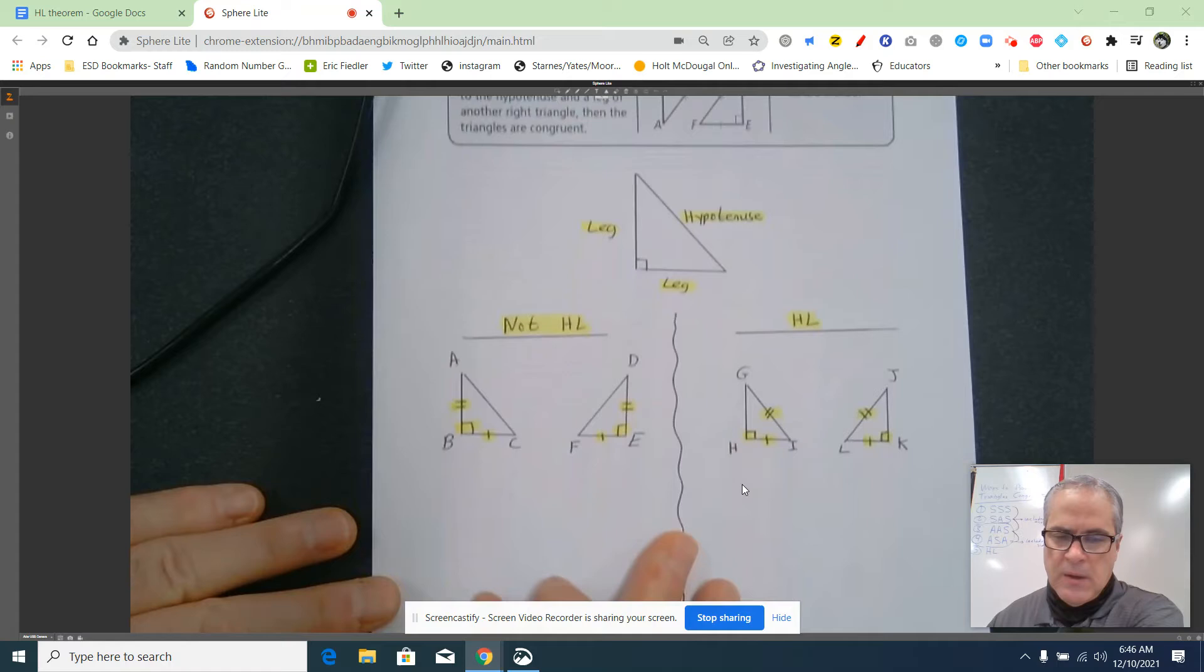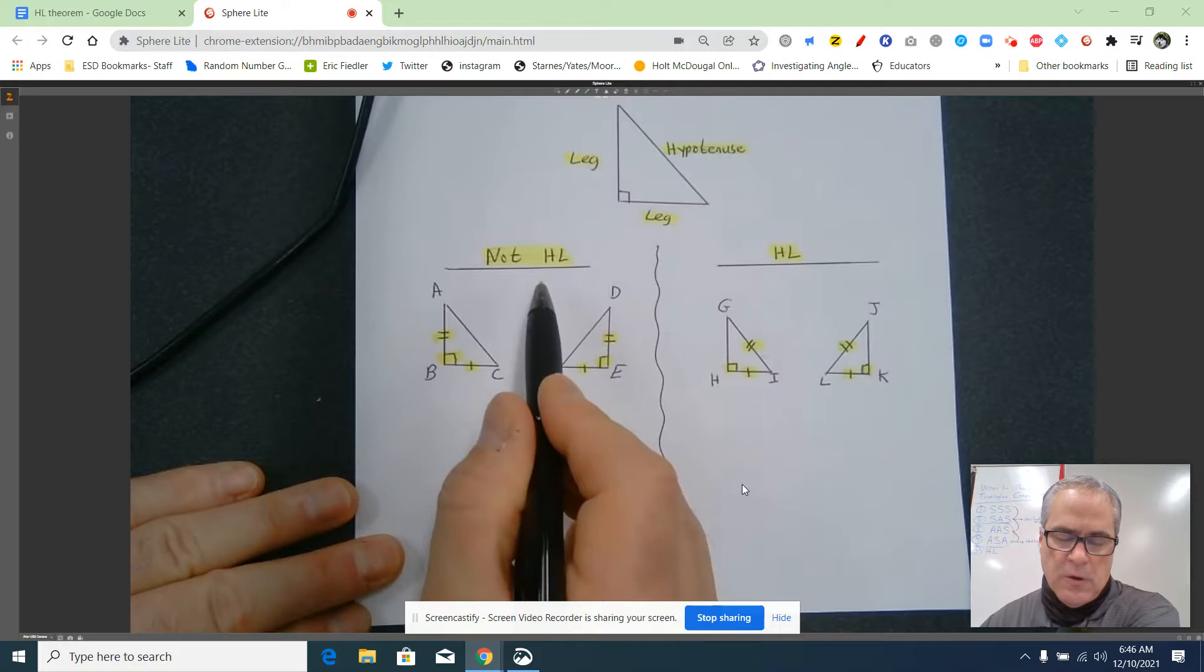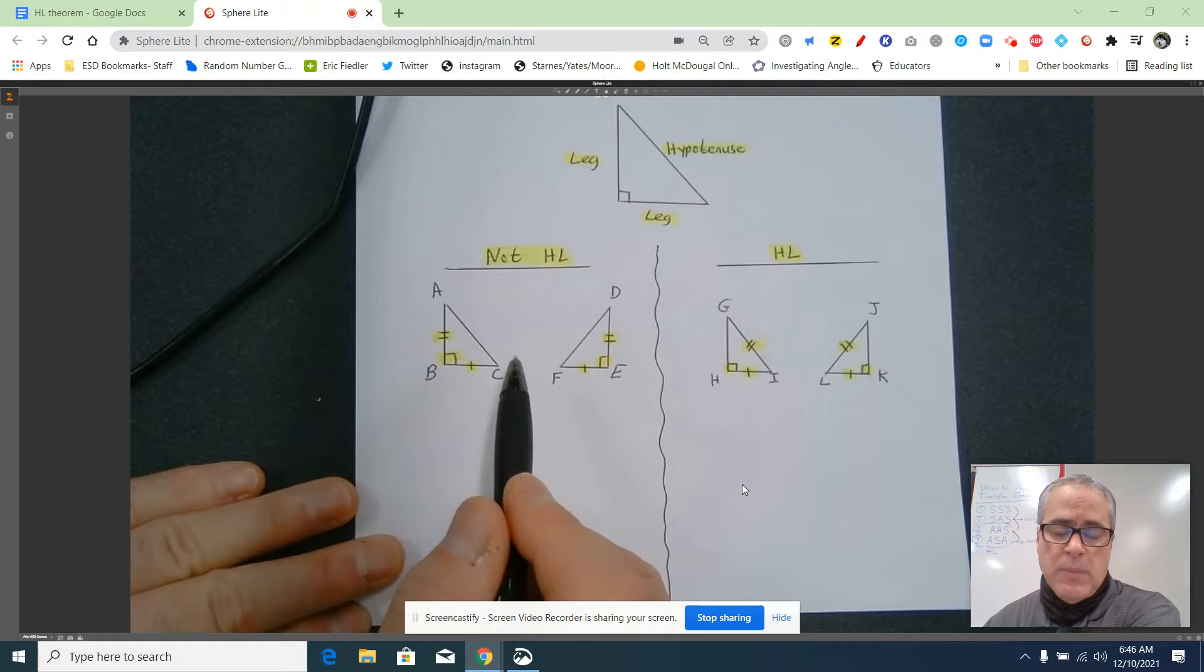This first one is a very common mistake for students. On the left, this is not HL congruency. Now I'm not saying these triangles aren't congruent. I'm just saying you cannot show it by the hypotenuse leg theorem. Let's take a look.